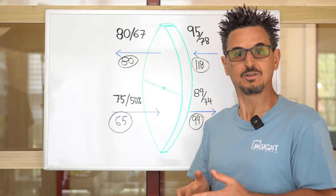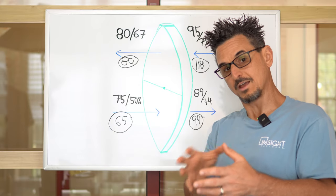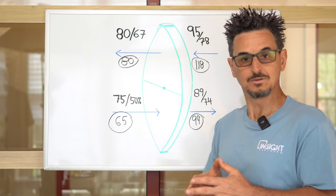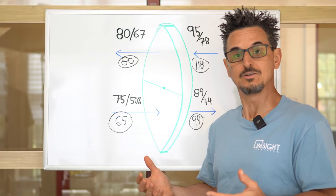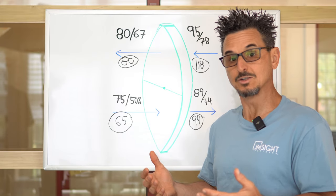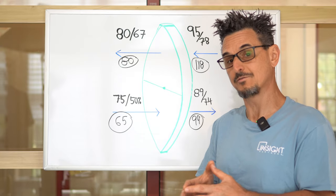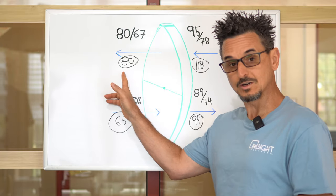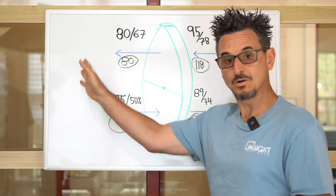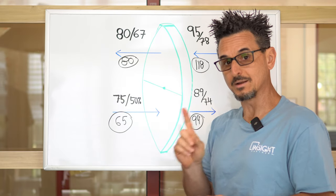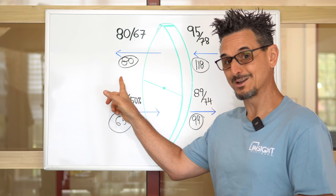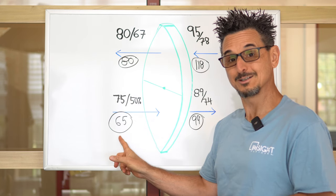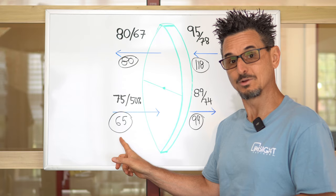Here's a common misconception that we hear all the time. People think that if you have an energy recovery wheel on your package rooftop or your split system, that you are safe and you're dehumidifying the space with that energy recovery wheel. That's actually not true. So be careful with that. You are removing moisture so that when it goes to the cooling coil, the cooling coil has to do less work.